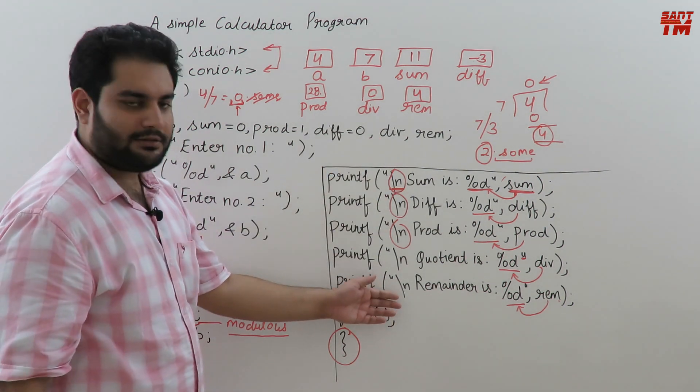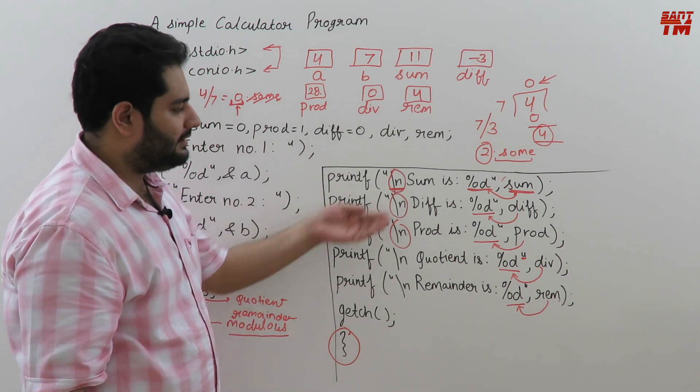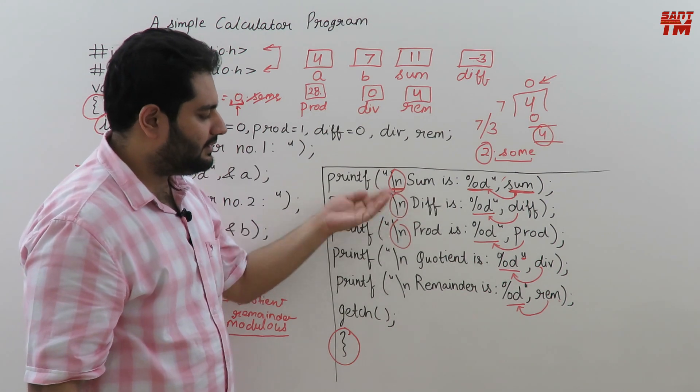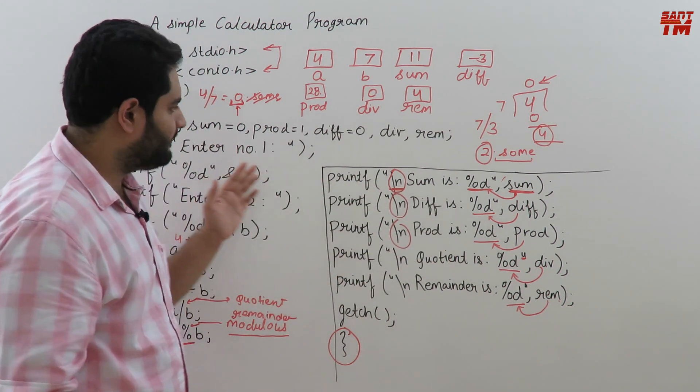Slash-n is also clear now — by putting slash-n, every output moves to the next line: 'sum is' in one line, 'difference is' in the next, 'product is' in the next, 'quotient is' in the next. I hope this example is now clear and you can run this program successfully on your PC. If you like the explanation and the video, please hit the like button, share it with your friends, and subscribe to the channel. If you want any doubts cleared, you can ping me at the email address in the video description, and you can also get free notes there.